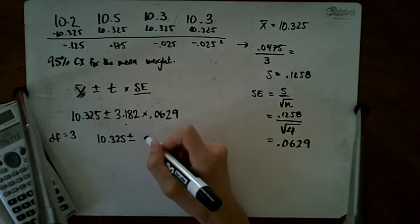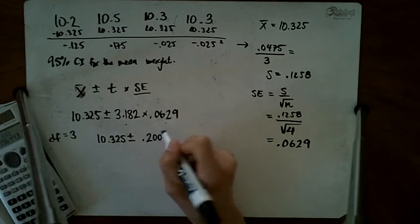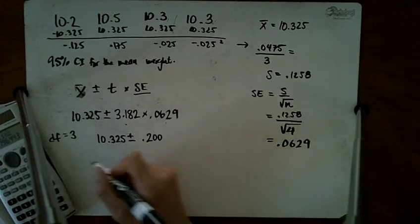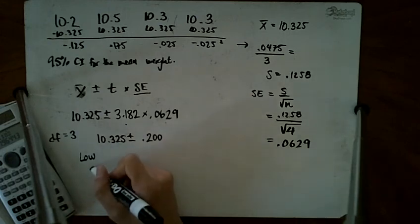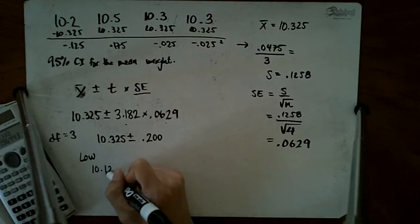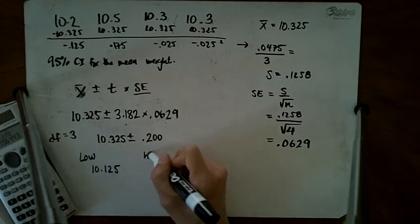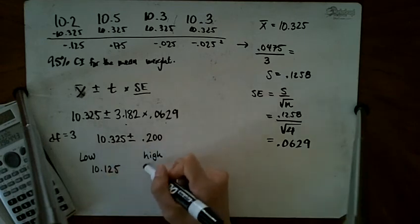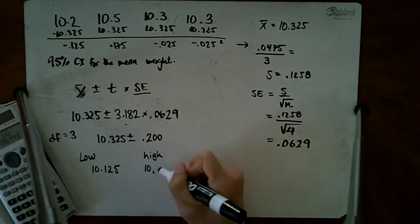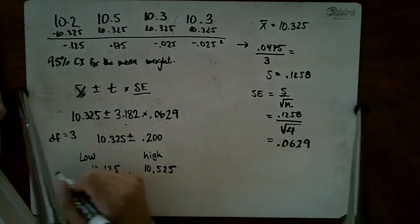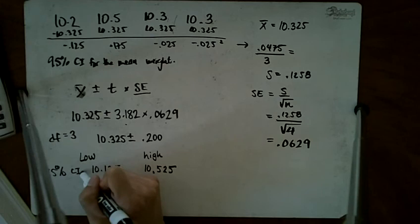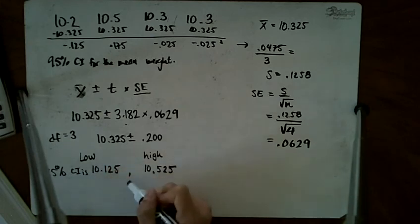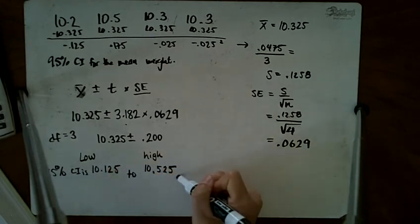That's plus or minus 0.200. On the low end, I do 10.325 minus 0.200 and get 10.125. On the high end, I do 10.325 plus 0.200, which gives me 10.525.